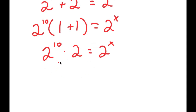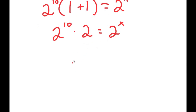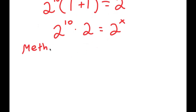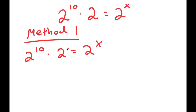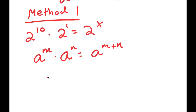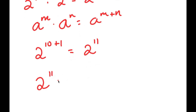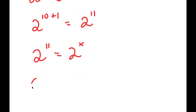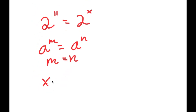For method 1: I have 2 to the power of 10 times 2 equals 2 to the power of x. I rewrite 2 as 2 to the power of 1. Using the rule a^m times a^n equals a^(m+n), I get 2 to the power of 10 times 2 to the power of 1 equals 2 to the power of 11. Since 2 to the power of 11 equals 2 to the power of x, and if a^m equals a^n then m equals n, x equals 11.